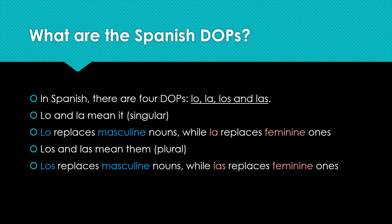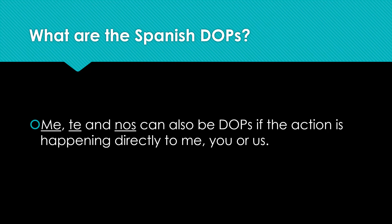You're already familiar with masculine and feminine, singular and plural, so this should be pretty easy to figure out which one would go with lo, la, los, and las. Me, te, and nos can also be used as direct object pronouns if the action is happening directly to me, you, or to us.